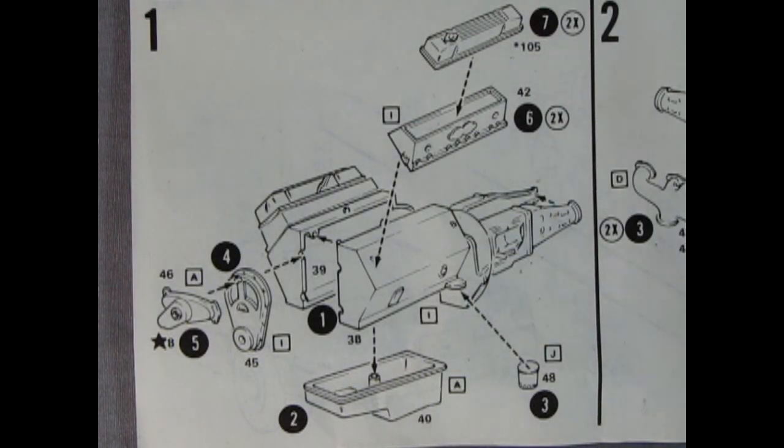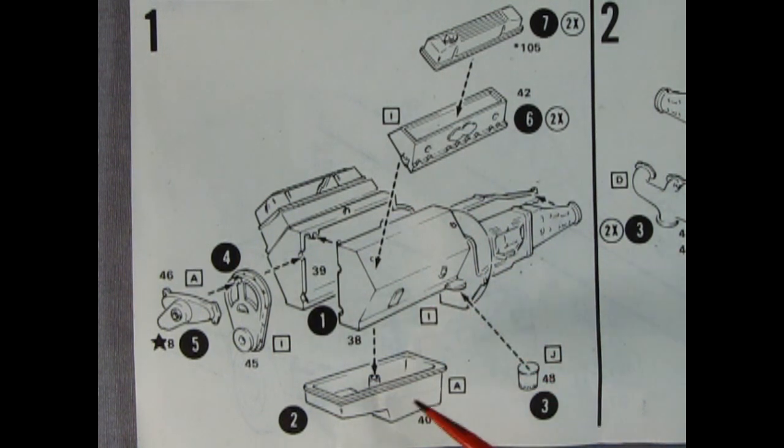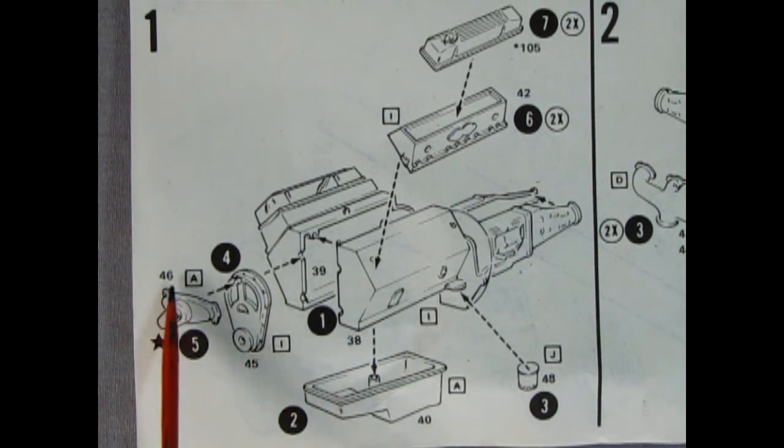So here we have the Chevy V8 motor. This is the 350 Corvette block. And there's the oil pan. We've got our engine block and transmission going together with our oil filter, our valve covers, our cylinder head, front timing chain cover, and the water pump. And here you can see each little letter and that refers again to the paint chart.